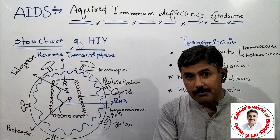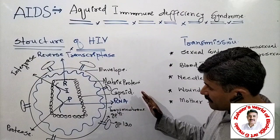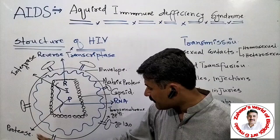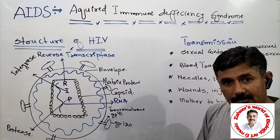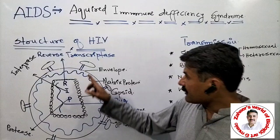Starting with the structure of the HIV virus — the structure is relatively simple. It has an outermost lipoproteinous layer, said to be an envelope. On this envelope, spikes are present. These spikes are proteinous structures made up of glycoproteins that perform a variety of important functions. One of these is called glycoprotein 120, or gp120.